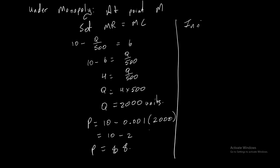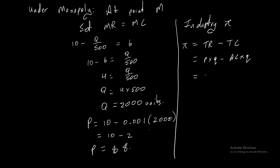Industry profit equals total revenue minus total cost, which is price times quantity minus average cost times quantity. This question gave a constant marginal cost, and if marginal cost is constant it equals average cost. So profit equals $8 times 2,000 minus $6 times 2,000, giving a total profit of $4,000.